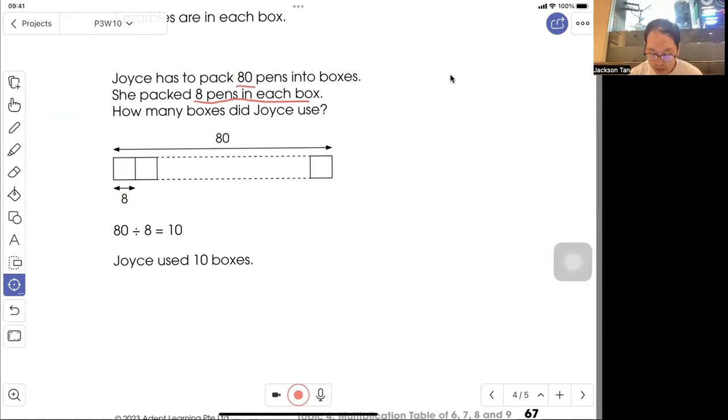Dot dot dot means there are multiple number of boxes. So eighty divided by eight, you know that there are ten. Joyce used ten boxes.